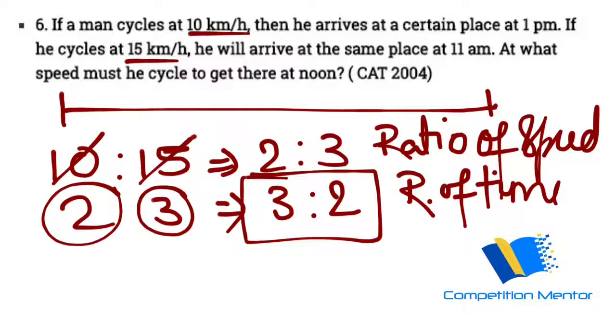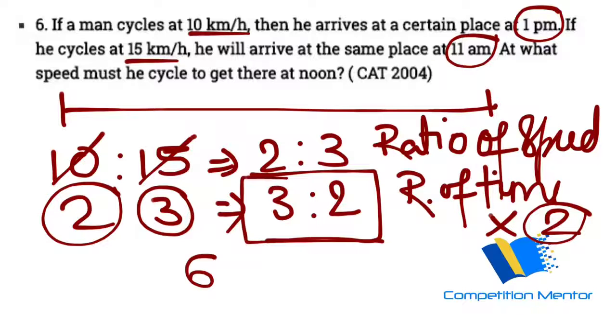So what is the gap? That is 1. But we need the gap of 2 hours because it was 1 PM being talked about and 11 AM being talked about. So that difference between the time which is happening is 2 hours. But we actually have a gap of 1 because of 3 minus 2 is 1. So the multiplication factor will become 2. So we have 6 hours and 4 hours.